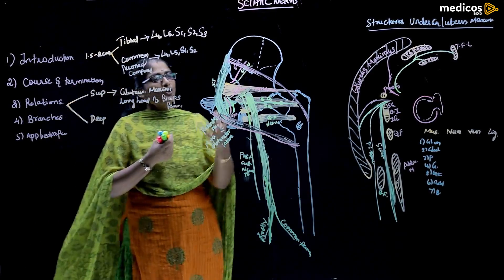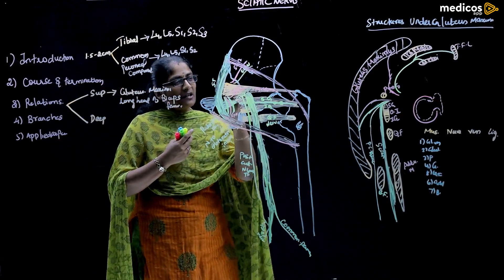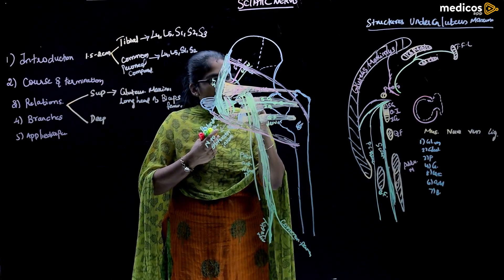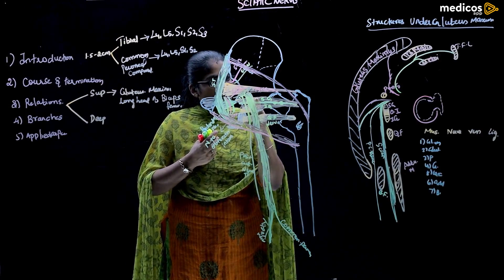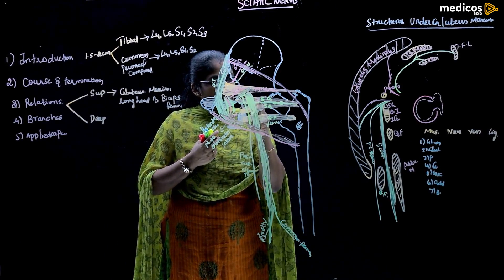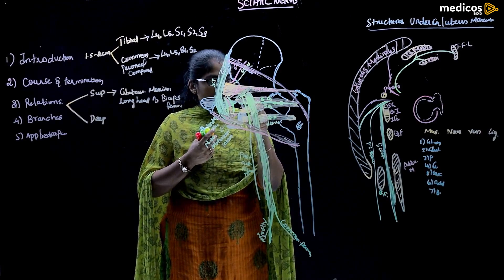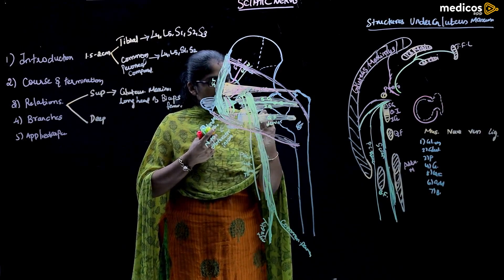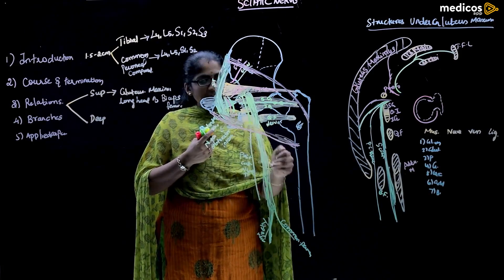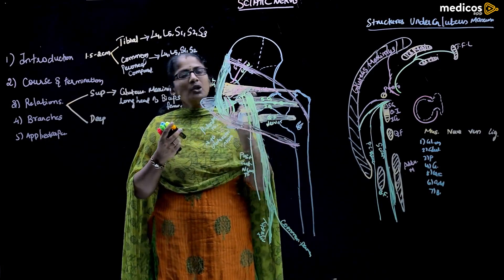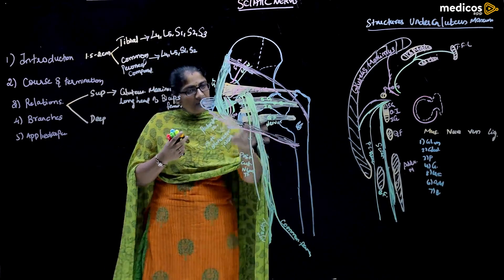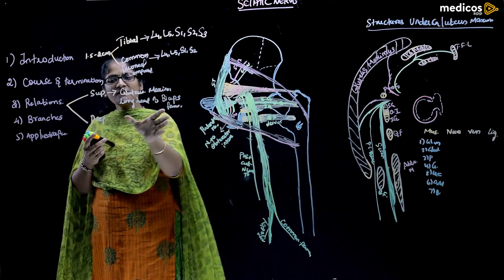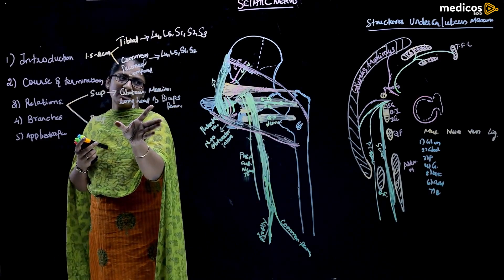The deep relations include the body of the ischium, superior gemellus, obturator internus, inferior gemellus, quadratus femoris, and adductor magnus. All these structures form the deep relations of the sciatic nerve.